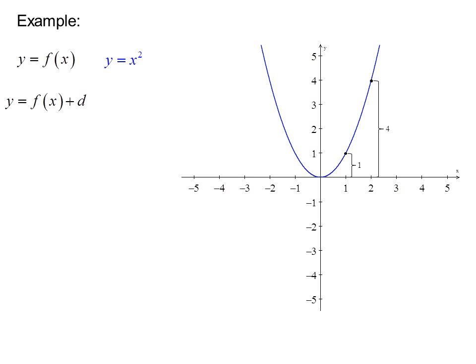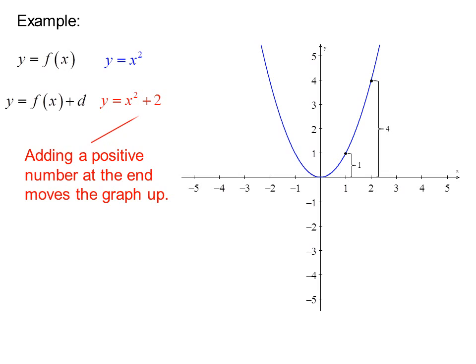Now if I look at the function with a constant added at the end, as in Y equals F of X plus D — for example, Y equals X squared plus 2 — adding a positive number at the end moves the graph up. So we just move the vertex up 2 and redraw the parabola.